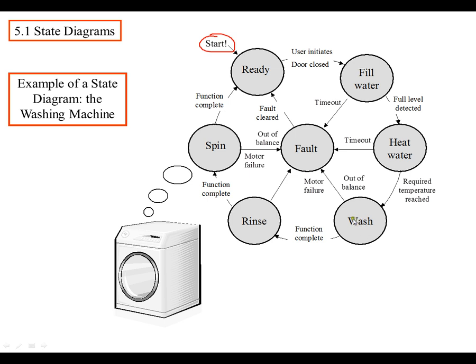Wash cycle. Now the only two other options are it's out of balance, like there's probably something wrong with the wash cycle, or the function's complete. So if it's out of balance, it's going to go back to this fault condition. The only way you can get out of the fault condition is to clear the fault with a button. You can see here that the fault condition, there's lots of things coming into the fault condition, but there's only one way to get out. That's to push the reset button. If you get the wash cycle, then the function is complete. You're done with the wash cycle. Now you're going to rinse.